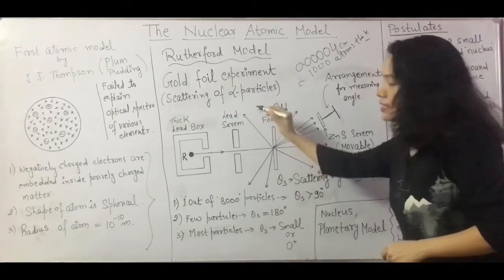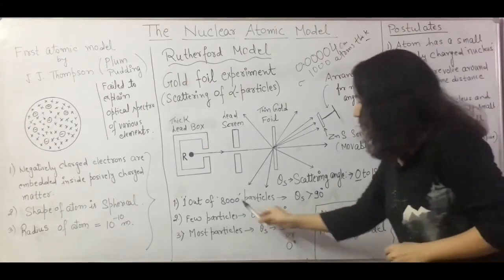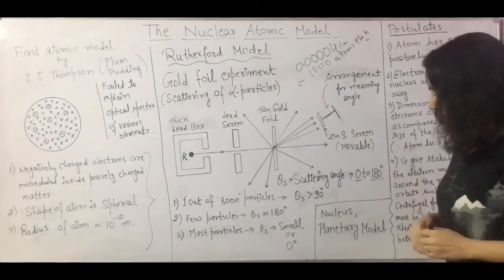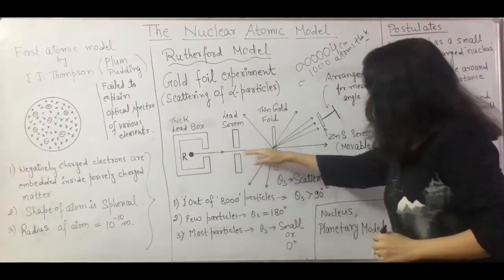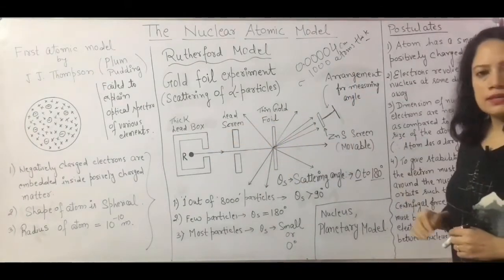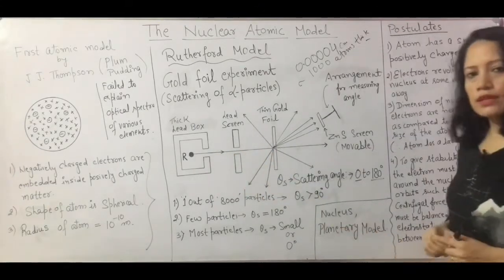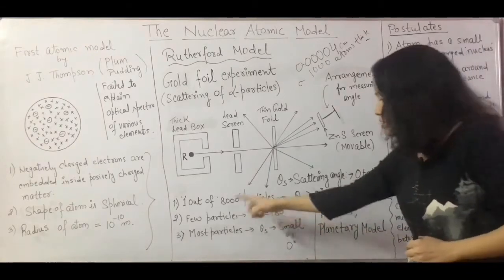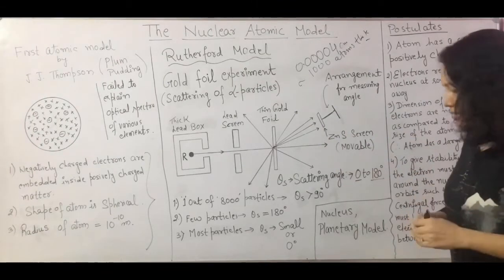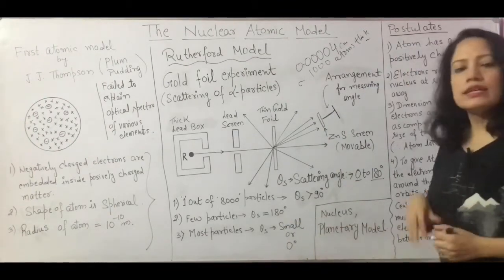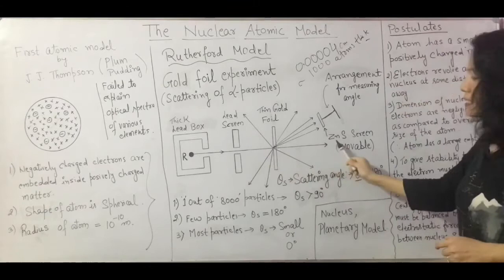The angle of scattering with respect to the direction of movement of the beam was measured. It was found that 1 out of 8000 particles were scattered by an angle greater than 90 degrees. Very few particles were scattered through an angle of 180 degrees, meaning those particles actually returned back in the same direction. Most of the particles either went undeviated or were scattered by a very small angle.